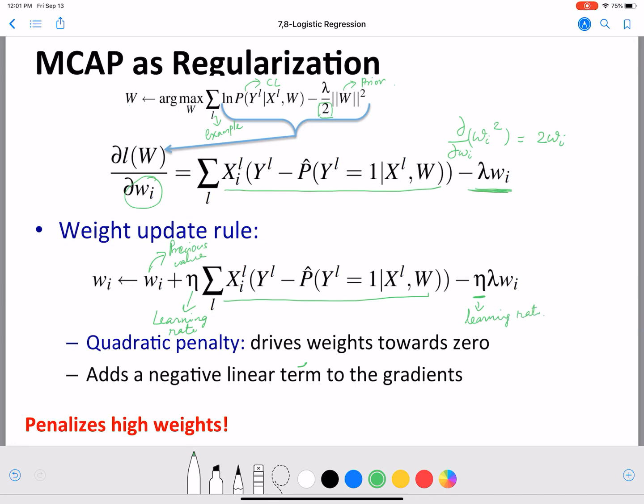Now we can see that there is a term that adds on to the W_i and there is a term that subtracts some fraction of W_i which means it is penalizing the weights and driving them towards smaller values or towards zero because it adds a negative linear term to the gradient which works very similar to regularization which also tries to drive the weights to lower values or towards zero if the features are not important.